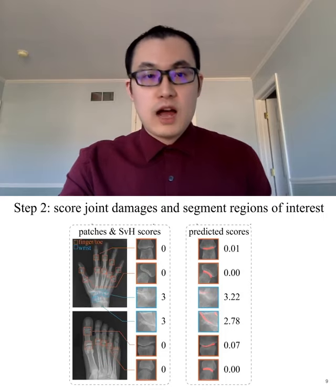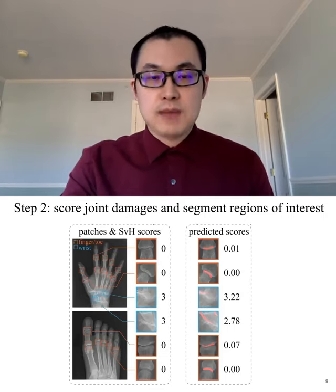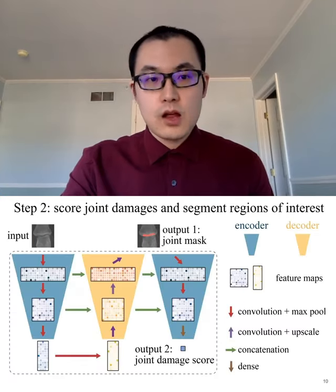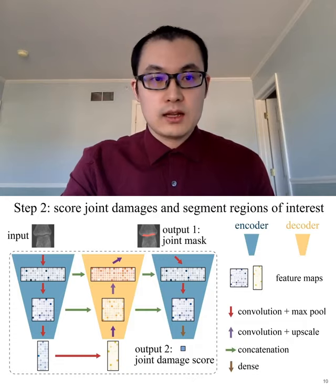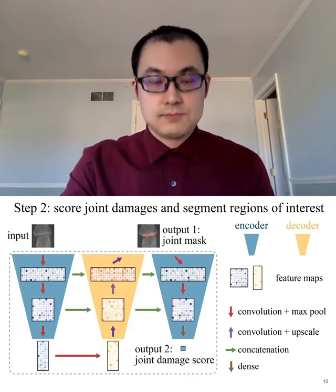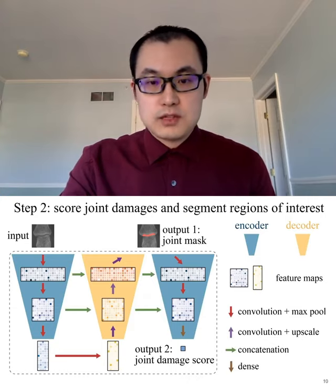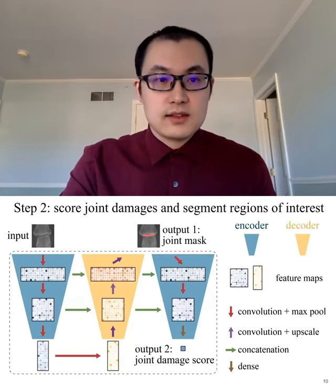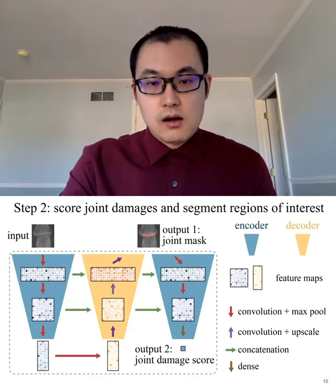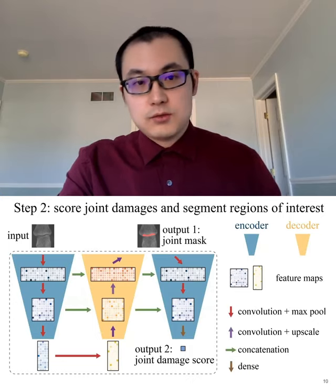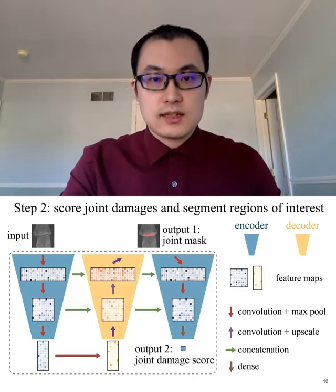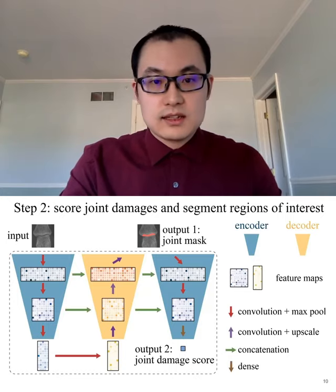In the second step, we cut the original image into small image patches and use these patches as input to predict the damage score. We designed a special network architecture which has two parts. The first part is similar to a U-net with an encoder and decoder, and this part generates the first output — a mask of the joint space. In the second part, we add another encoder which generates the second output: the joint damage score. This special design not only improves prediction performance for joint damage score, but also highlights regions of interest, which is potentially helpful for radiologists to further examine the original image and make decisions in clinical settings.